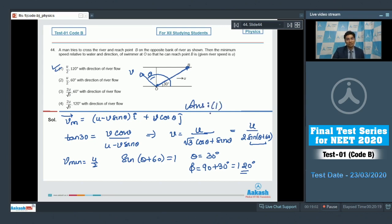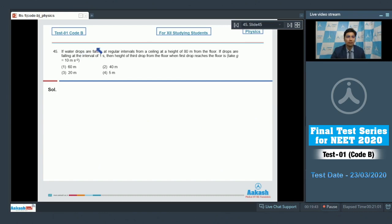Now let us solve question number 45. Students, question 45 says if water drops are falling at regular intervals from a ceiling at a height 80 meter from the floor. If drops are falling at the intervals of 1 second then the height of third drop from the floor when the first drop reaches the floor is...